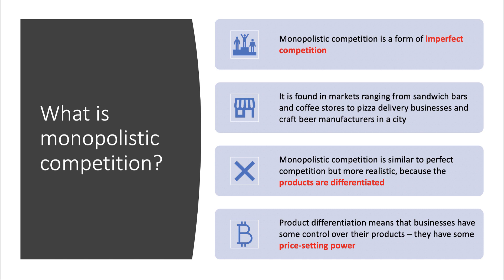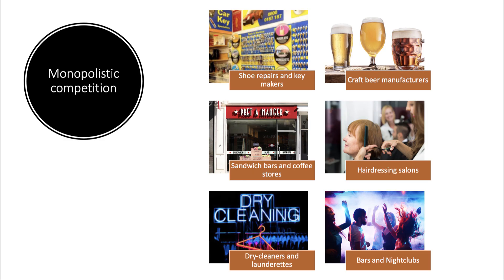Because firms are selling differentiated products, they have a downward sloping demand curve — the AR curve and the MR curve slope downwards — and that gives the firm some control over their products. They have some pricing power, but that pricing power will be limited. The demand curve is likely to be price elastic because of the range of choice available, and the cross price elasticity of demand will be pretty high.